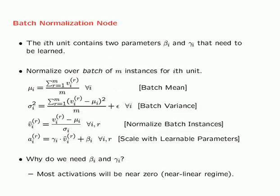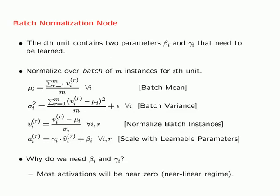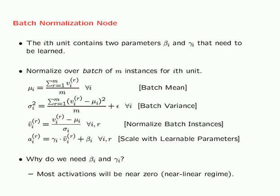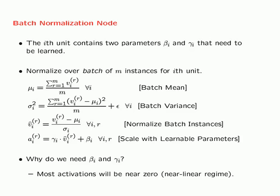Once set up, the operations performed for each batch normalization node are just like any other node in the network. Since you can treat the BN node like any other node, you can back propagate through it. The main difference is that when back propagating, you must be careful that you are normalizing over the batch, so the back propagation equations must use the whole batch. The gradients of βᵢ and γᵢ — the learnable parameters — can also be computed during back propagation. The detailed derivation is given in the book.